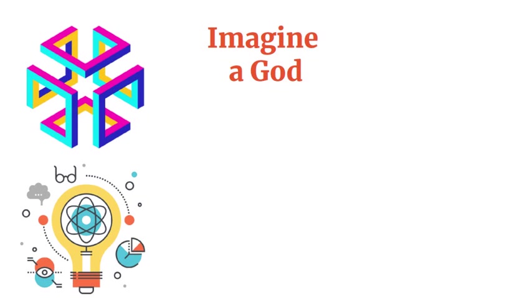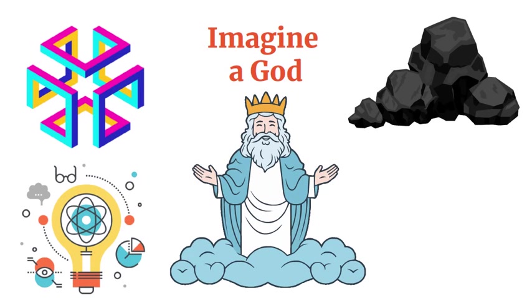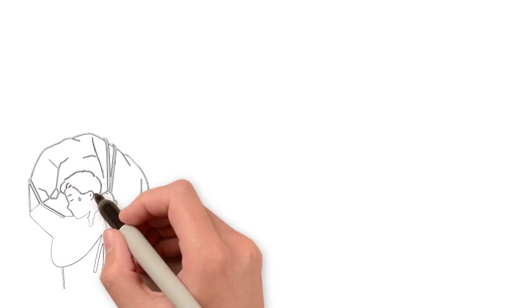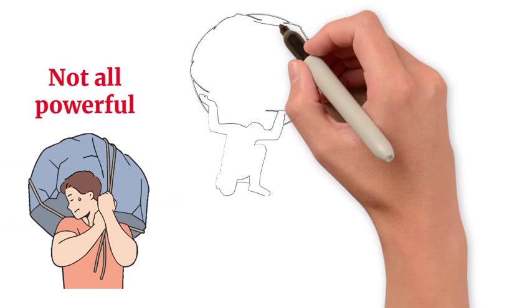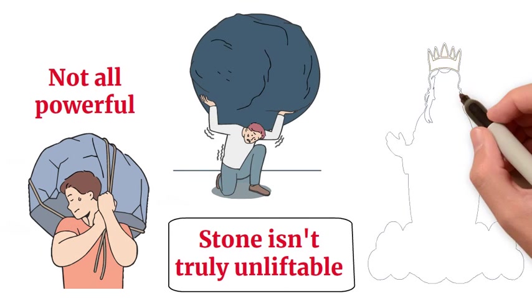Imagine a god capable of performing any task imaginable. If this god crafts a stone of infinite weight, one might presume it could effortlessly lift it. However, if it cannot lift the stone, then it's not all-powerful. Conversely, if it can lift the stone, then the stone isn't truly unliftable, questioning God's omnipotence.